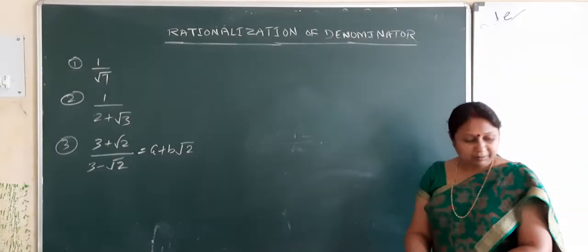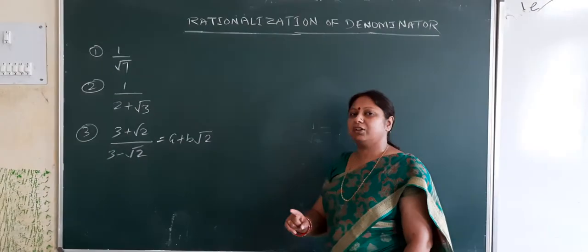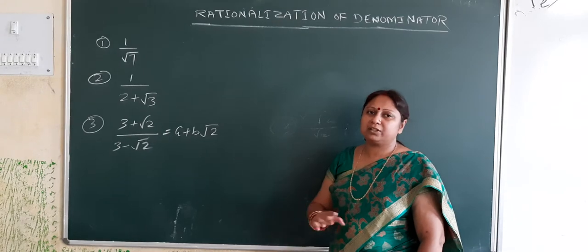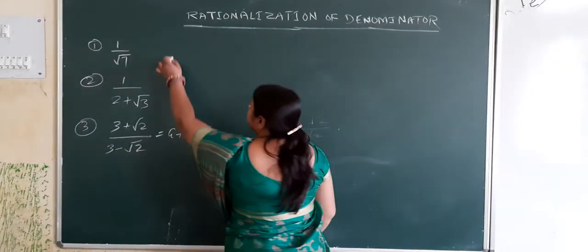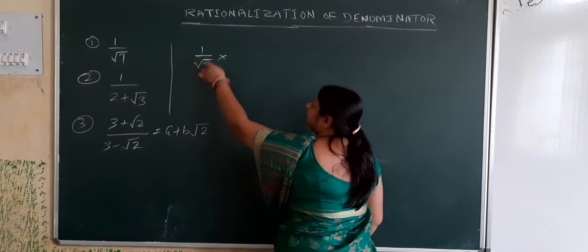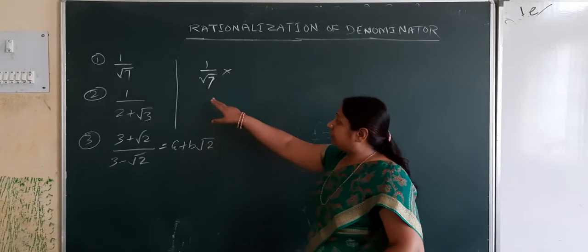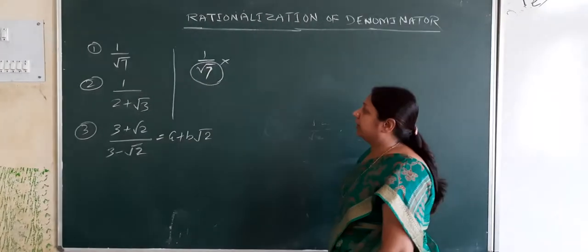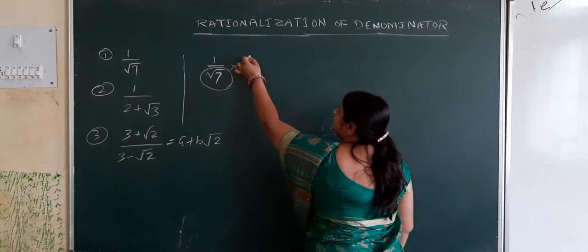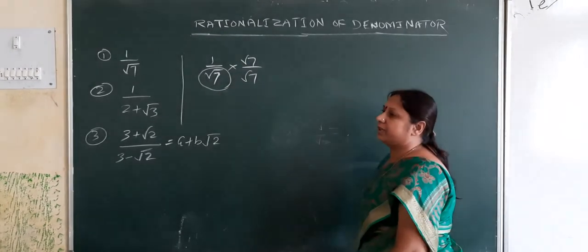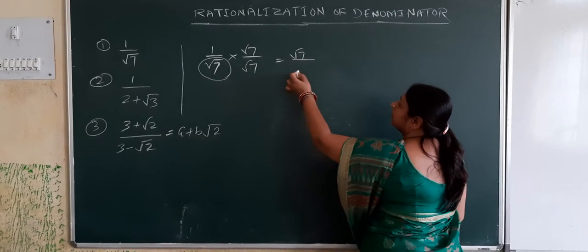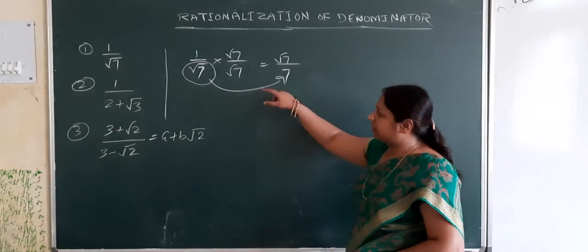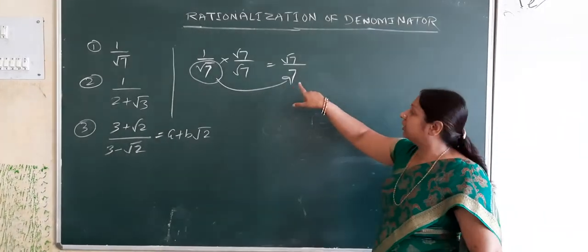The rationalizing factor is defined as: when the multiplication of two irrational numbers is rational, then each one is the rationalizing factor of the other. For example, consider 1 by root 7. We find the rationalizing factor of root 7, which is root 7 itself. Multiplying and dividing by root 7 gives root 7 over 7, where 7 is now a rational number. The irrational denominator has been converted into a rational one.